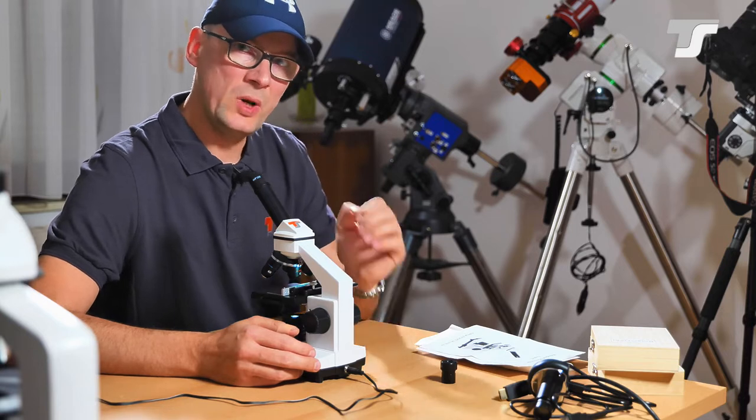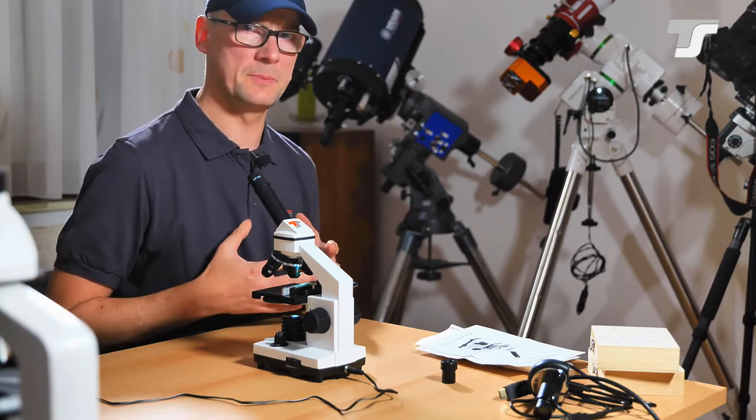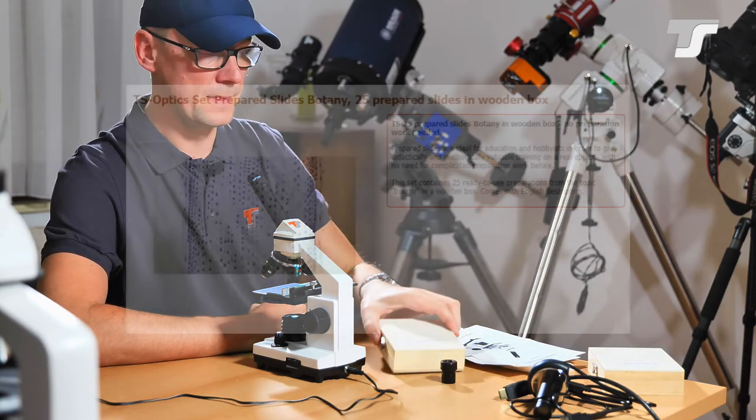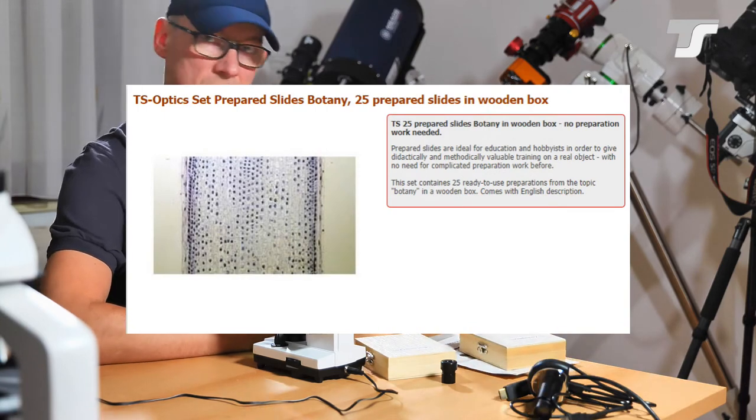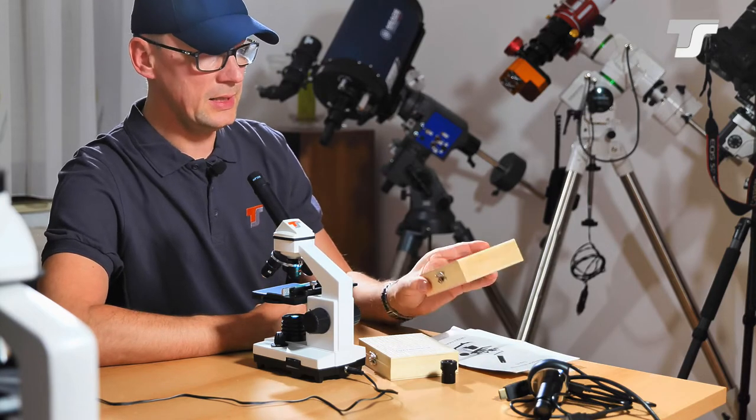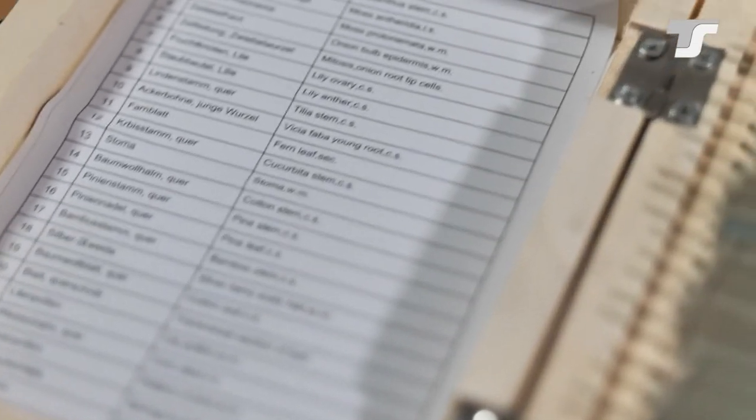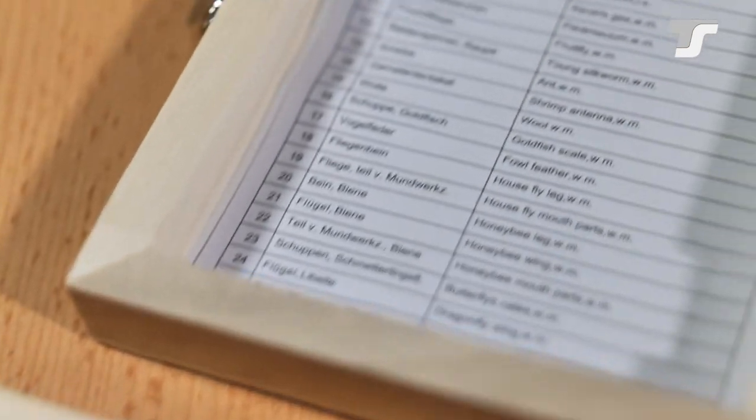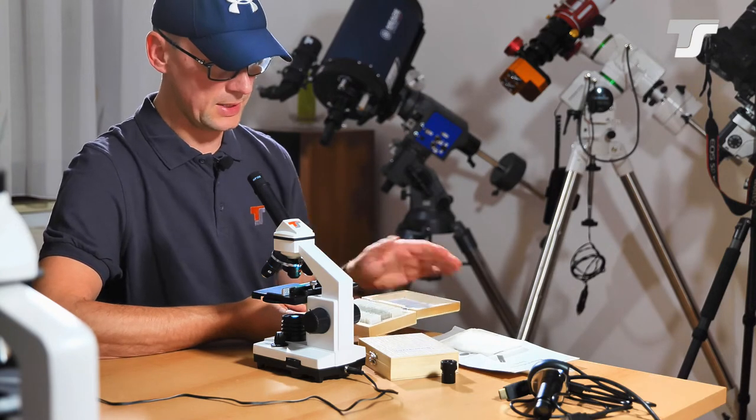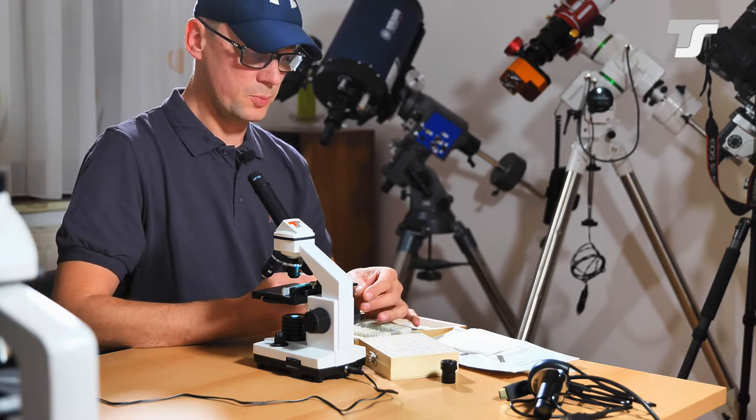And now you have multiple options how to start. For example, if you want to start really out of the box, super quickly, don't want to mess around with preparing subjects, then we offer you some sort of these. These are prepared samples. I chose for this demonstration botany and zoology. In each box there come 25 prepared samples in a really nice tiny wooden box. There's also a sheet of paper in it with the description of every glass plate that you can find here.